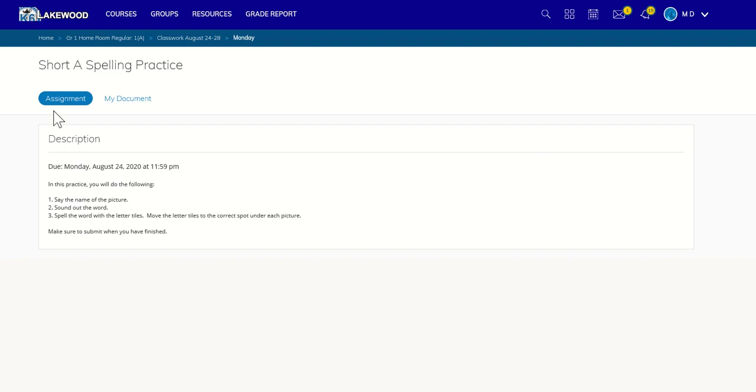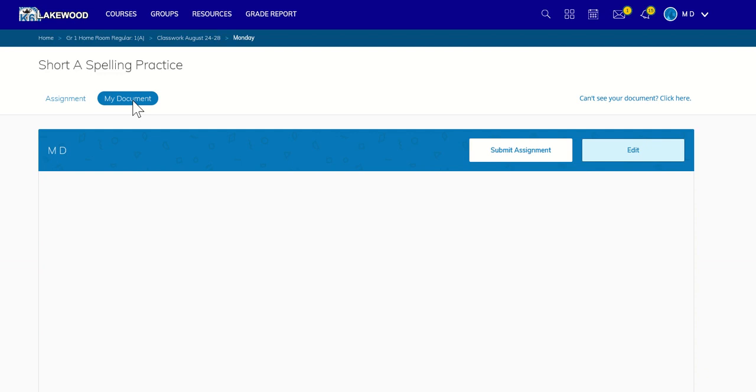When you first click on the assignment, you will come to this screen. There's assignment and my document. On the assignment section, there will be directions here on what you need to do. To go to my document, you just need to click on it.